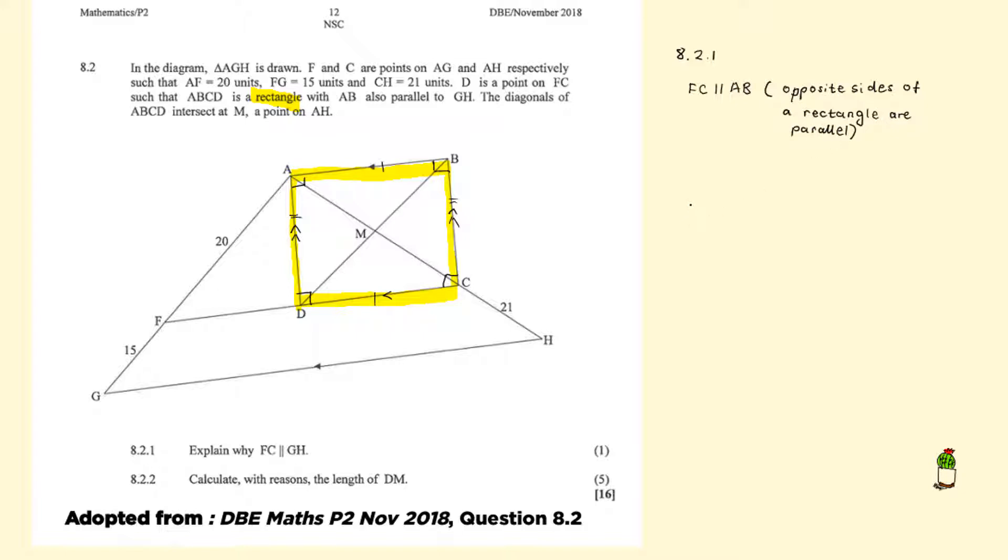So this is opposite sides of a rectangle. AB is parallel to GH. This was given. Therefore, FC has to be parallel to GH because they are both parallel to AB.